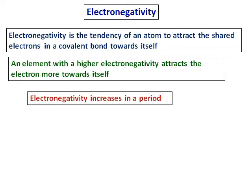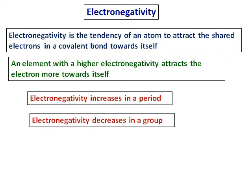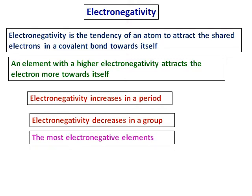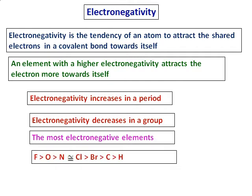How does electronegativity change in the periodic table? Electronegativity increases across a period and decreases down a group — a trend similar to electron affinity. The most electronegative elements are fluorine, which sits at the top-right of the periodic table, then oxygen and nitrogen. It is important to remember that F, O, and N are the most electronegative elements, as this will be useful in later chapters.